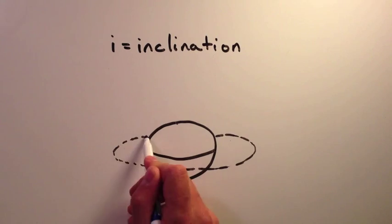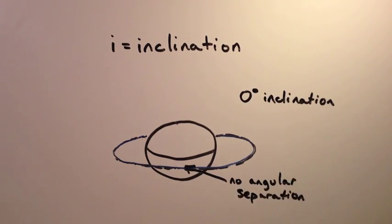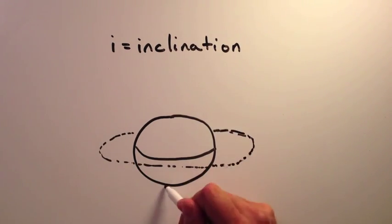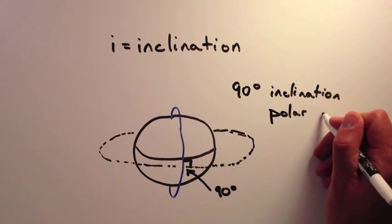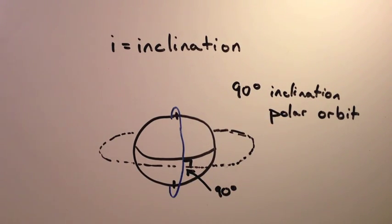When a satellite has zero inclination, this means that the orbital plane is aligned with the equatorial plane. When a satellite has 90 degree inclination, this means that the orbital plane is perpendicular to the equatorial plane. This is also called a polar orbit, since the satellite travels directly over the north and south poles.